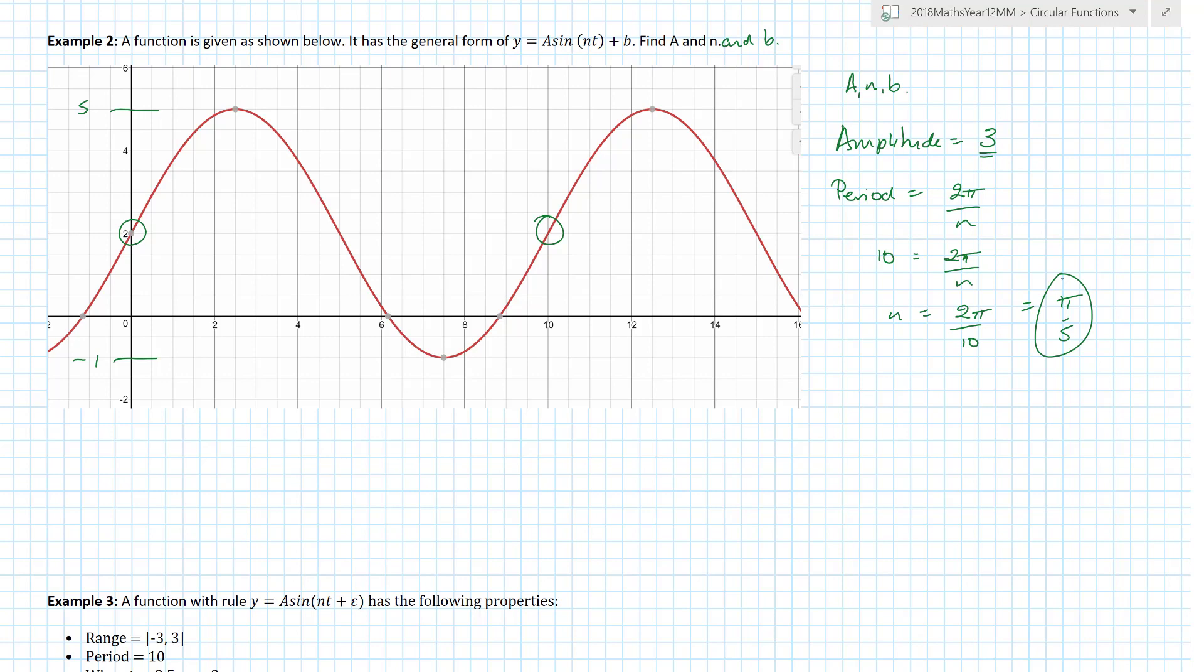And then b, well how are we gonna find b? That seems really confusing. Well if you think about it we know the median is 3 from the bottom and 3 from the top which passes through 2. That point should realistically pass through 0, and so we now know b is equal to plus 2. So therefore we could restate the equation as y is equal to 3 sine π on 5 times t plus 2.